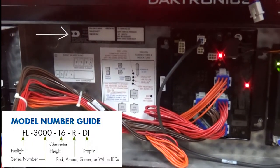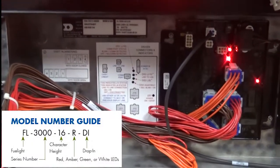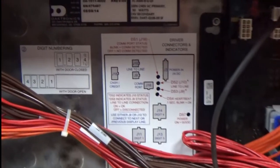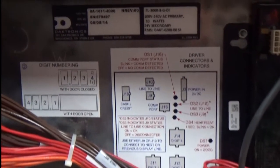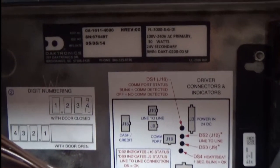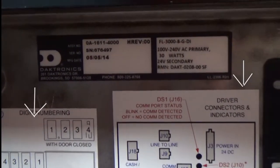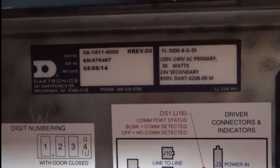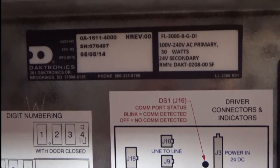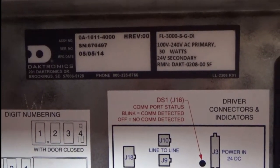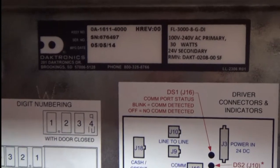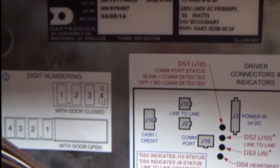There will be a label with the model-specific information and part number, as well as a couple of drawings on the inside cabinet wall to assist with identifying driver connectors and indicators, as well as digit numbering and layouts.